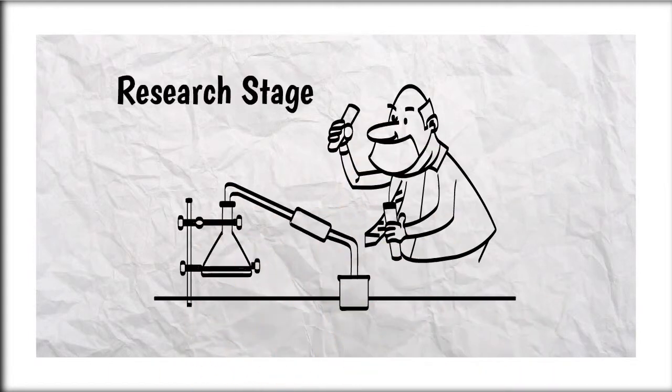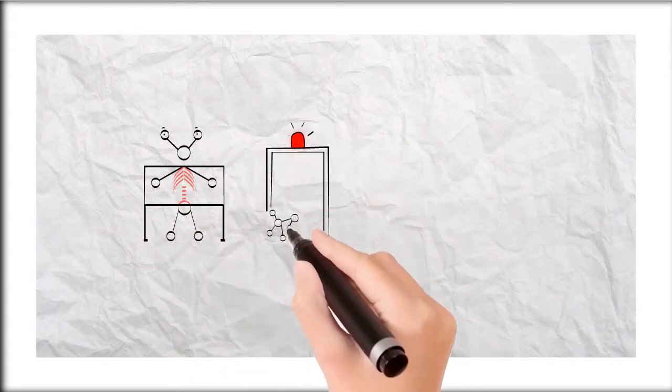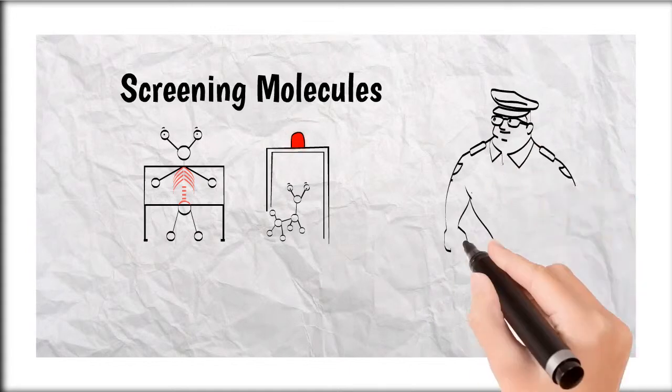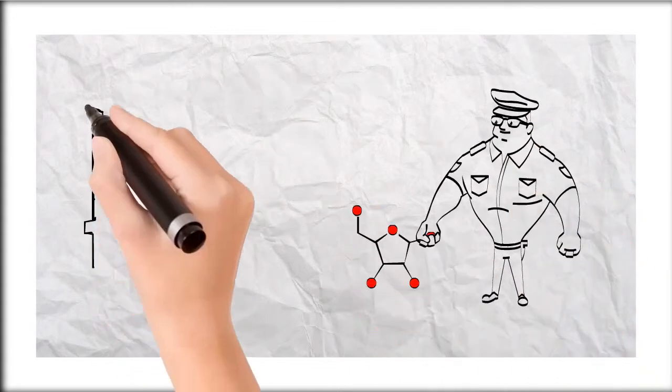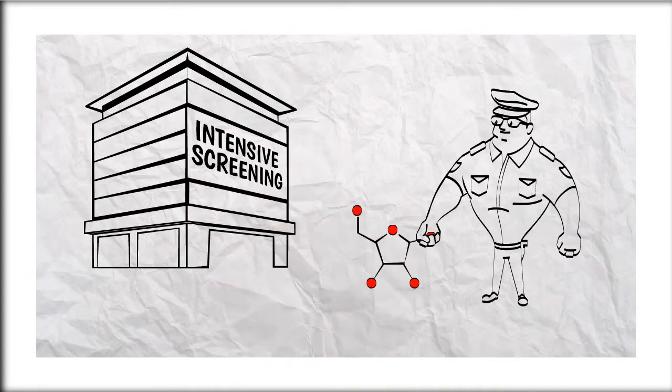Starting with the research stage, tens of thousands of molecules are screened for certain activity, which can be looked at for potential use using different approaches, such as looking at the chemistry and mechanism of action or the pathology of the disease.